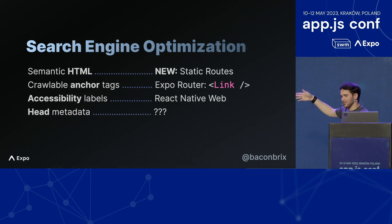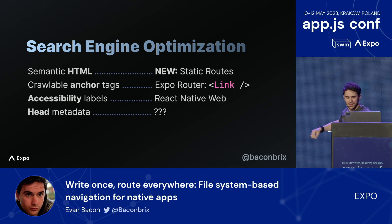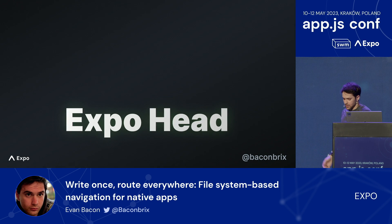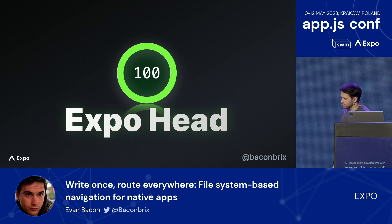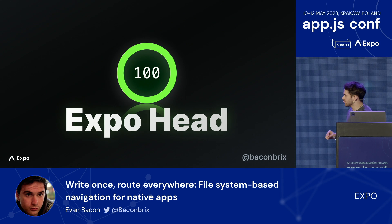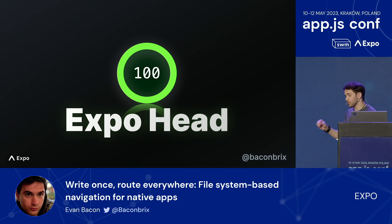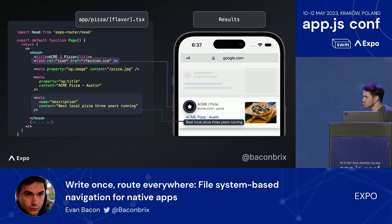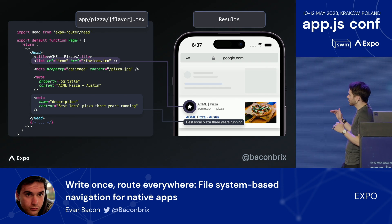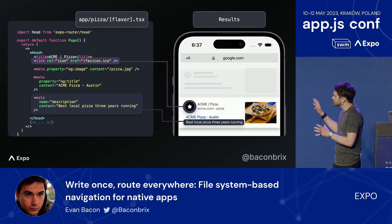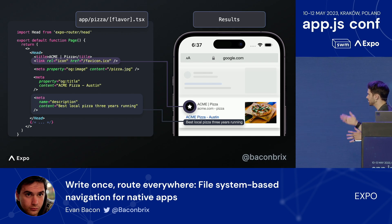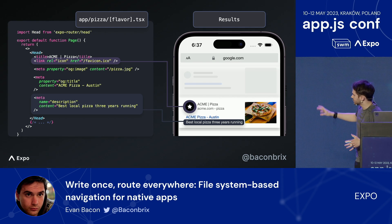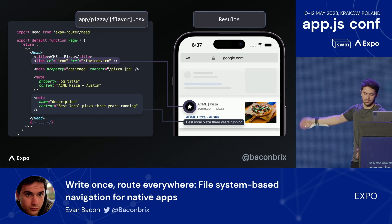But what about the title, the icon, the favicon, and all that? For that, we created the new Expo Head module, which is powered by universal links. This Expo Head module generates metadata per route for both web and native. To use this, you simply import the Head component in any of your routes and use it just like you would any other head component in a web framework. All the content you define here will show up in search results as you'd imagine.